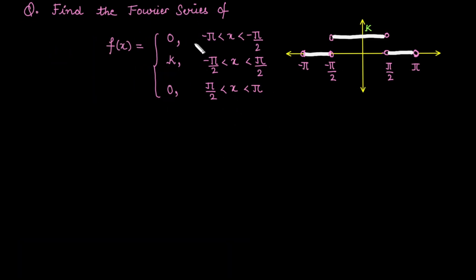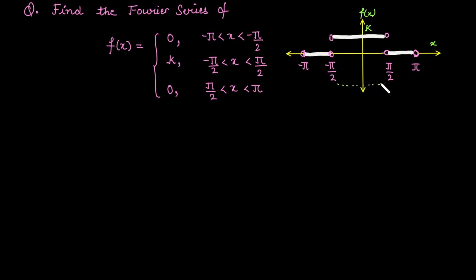The second function is broken into three parts: from minus pi to minus pi by 2 the value is 0; from pi by 2 to pi the value is 0; and from minus pi by 2 to pi by 2 the value is a constant k (any positive or negative quantity). Looking at the graph, it is not symmetric about the origin but is symmetric about the y-axis, meaning the function is even.